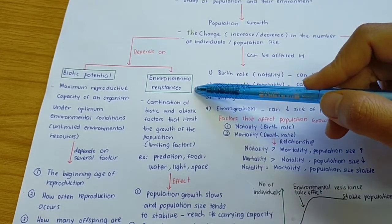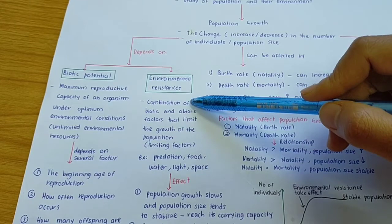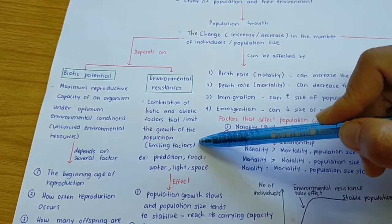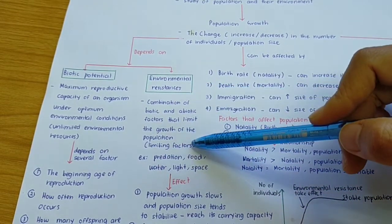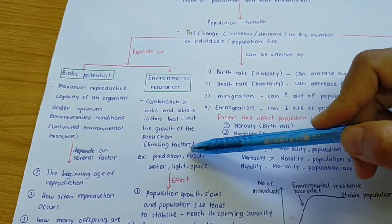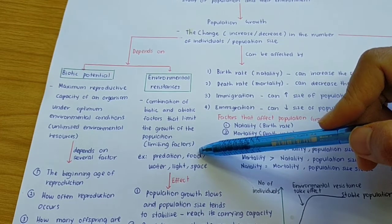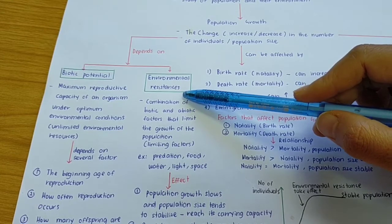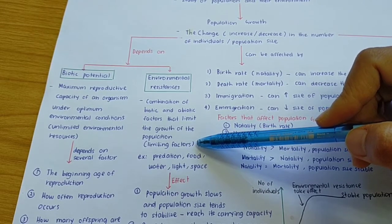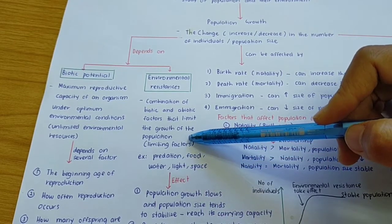Environmental resistance is the combination of biotic and abiotic factors that limit the growth of the population — we call these limiting factors. Environmental resistance is any factor that can limit population growth. Examples include predation, food, water, light, and space. If there is not enough food, that is environmental resistance — it will limit the growth of the population. Similarly, if there is no space or no light, it can affect population growth.